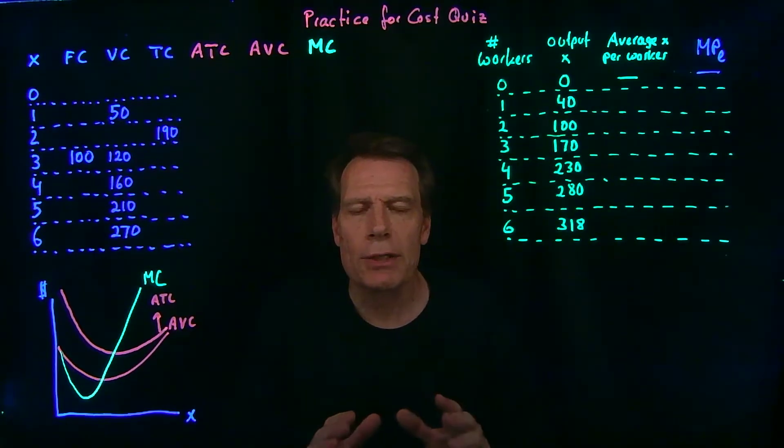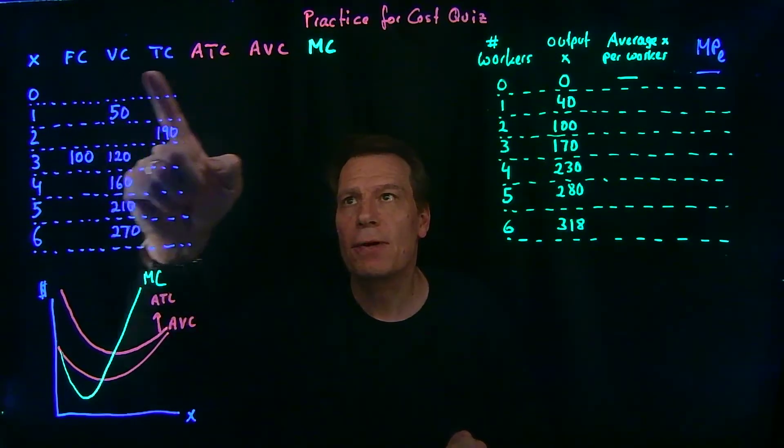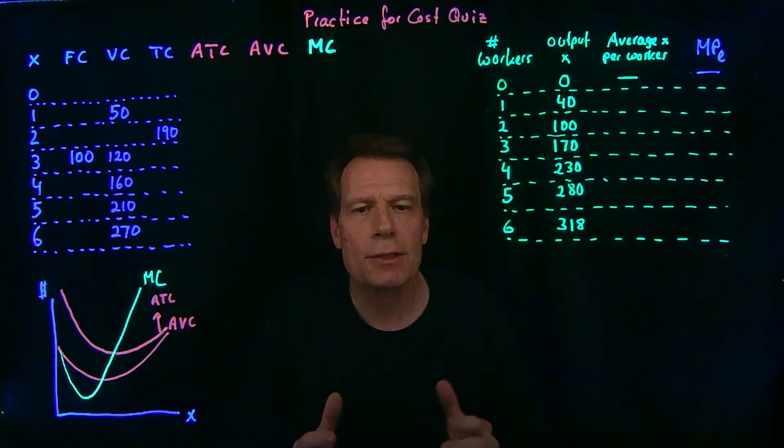In the last two modules, we explored different ways of thinking about the costs of firms, and we began with a table illustrating the different types of costs, and then explored how they're related to one another.